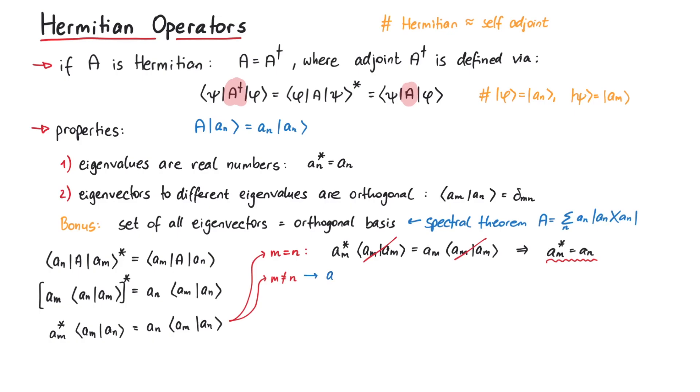In the first case, if the eigenvalues am and an are different, the inner products have to be zero for the equation to be valid. Therefore, the eigenvectors have to be orthogonal, which proves the second statement.